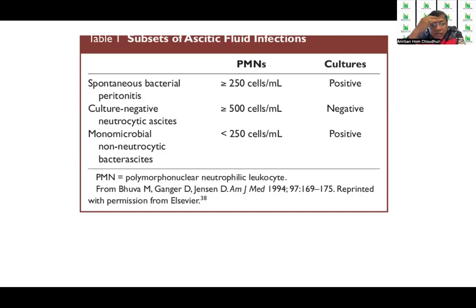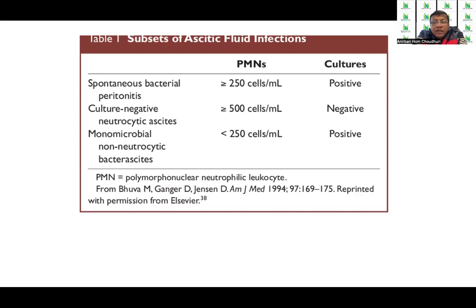There are certain subsets of ascitic fluid collections important in picking up the diagnosis. In spontaneous bacterial peritonitis, the PMN count is more than 250 cells and the culture is positive. In culture-negative neutrocytic ascites — a mimic of SBP — the polymorphs are more than 250 but cultures are negative. In monomicrobial non-neutrocytic bacterial ascites, the count is less than 250 and the culture is positive. This helps filter out the mimics from true SBP.